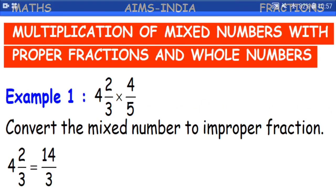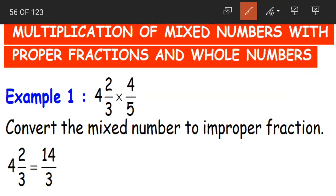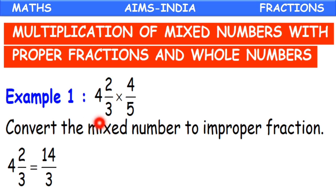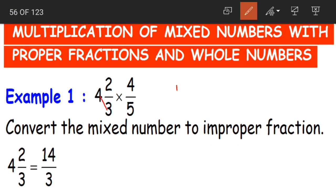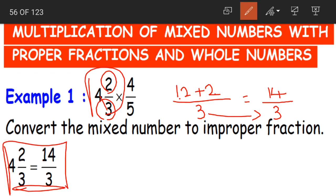Now let us look at some more examples — multiplication of mixed numbers with proper fractions, and also with whole numbers. Mixed numbers are the same as mixed fractions. For the first example, 4⅔ into 4/5: whenever we have a mixed fraction, we need to convert it into an improper fraction. 4×3 is 12, plus numerator 2, divided by denominator 3: 12+2 is 14, so 4⅔ equals 14/3.